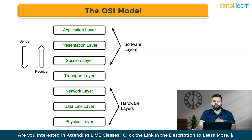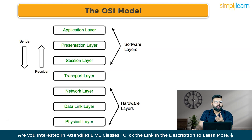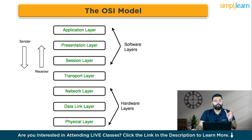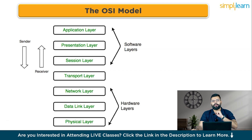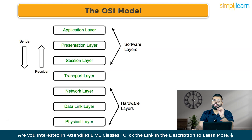Layer 5 is the session layer — it sets up, manages, and ends connections between applications, like a conductor who starts and stops an orchestra's performance at the right time. Layer 6 is the presentation layer — think of this as a translator that converts data from a format the network understands to a format the application can use, like someone translating a foreign movie into your language. Layer 7 is the application layer — the top layer representing data and services that most users interact with, like emails, web browsers, and other applications.